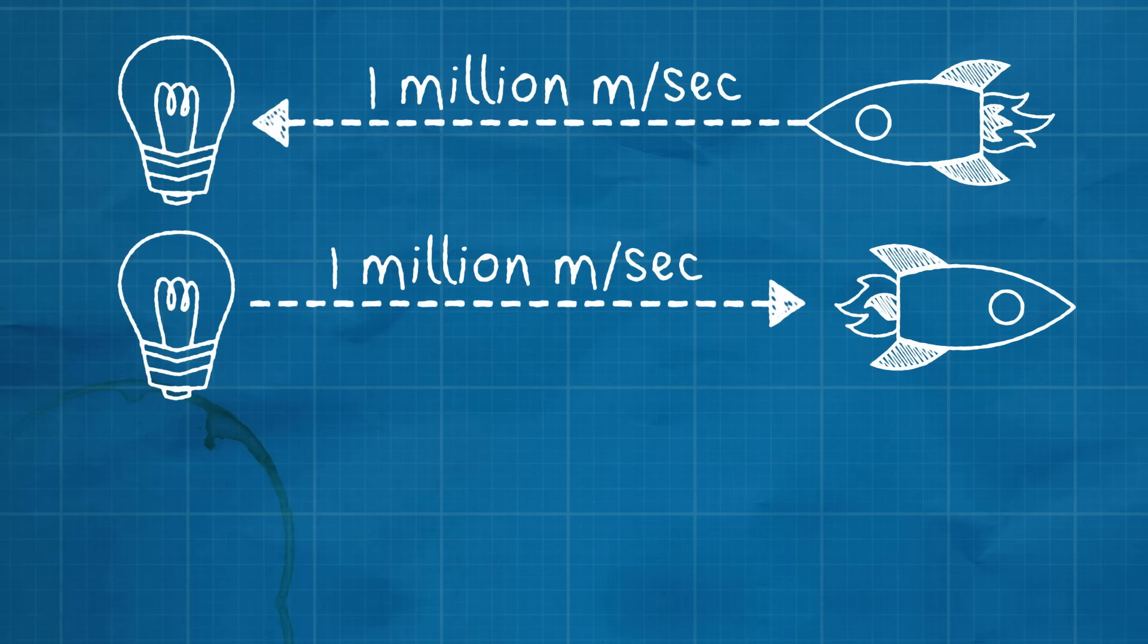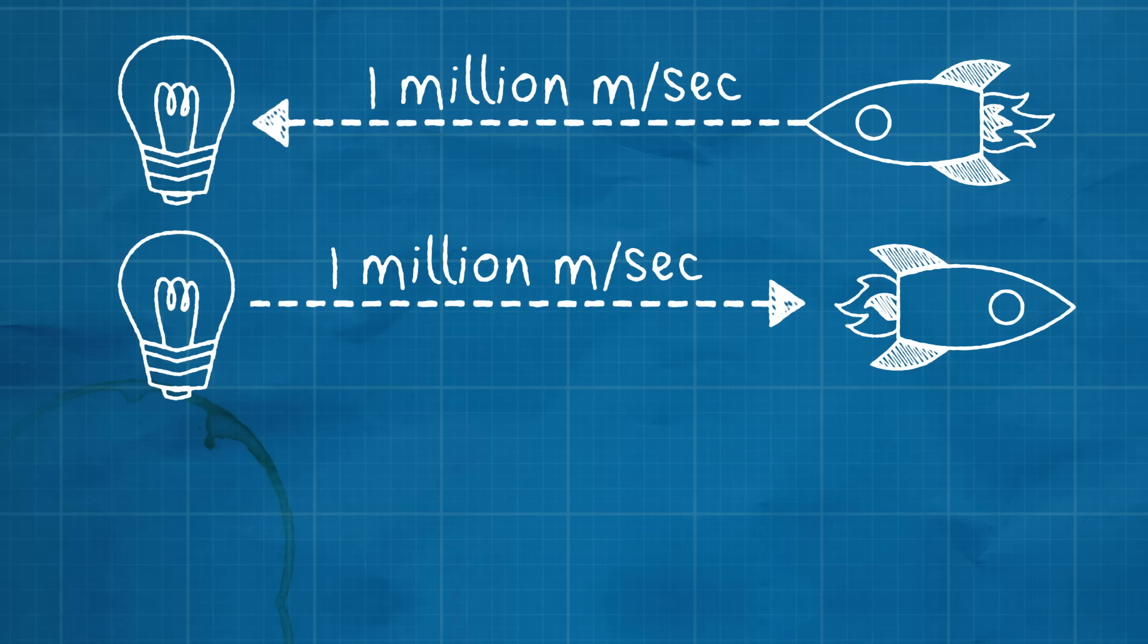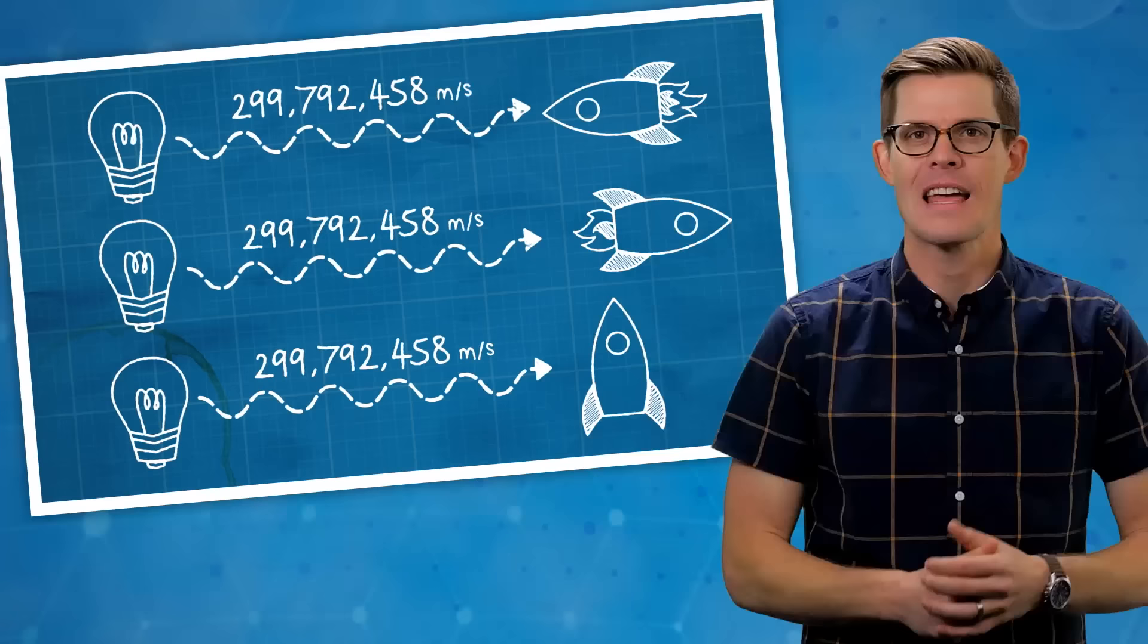An object moving toward a light source at a million meters per second, an object moving away from a light source at a million meters per second, and an object sitting still will all measure the light approaching them at exactly the same speed. How can this be true?